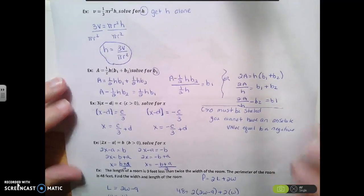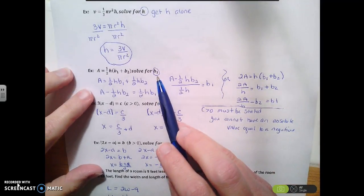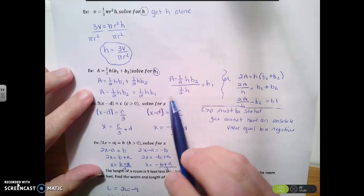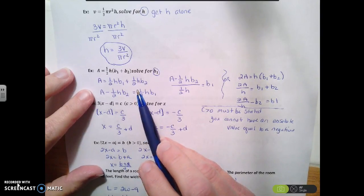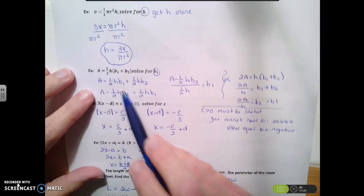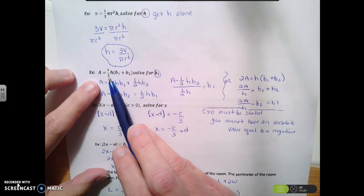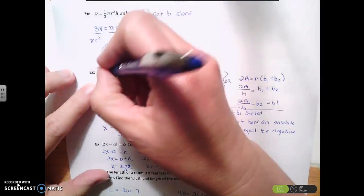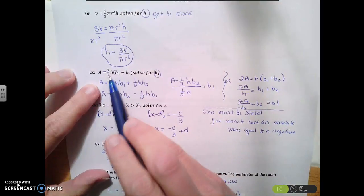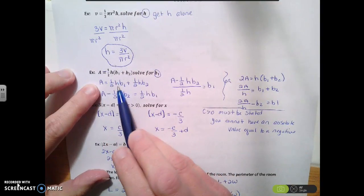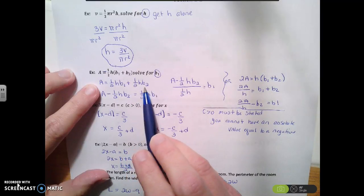So for the next one, I want to solve for b1. So I showed you a couple different ways to do it. The first way, because it looks as pretty, but it is right. So the first one, we distributed the one-half. We distributed the one-half h, and we ended up with one-half hb1 and one-half hb2.